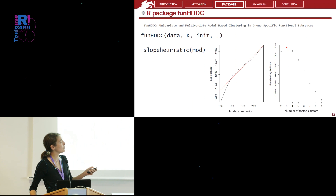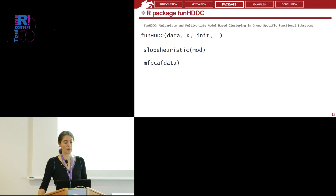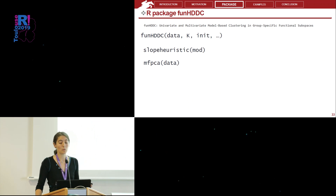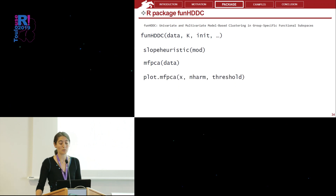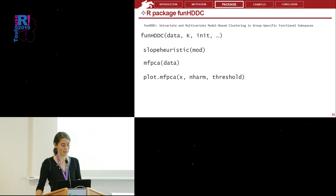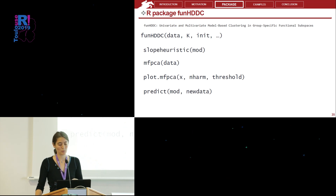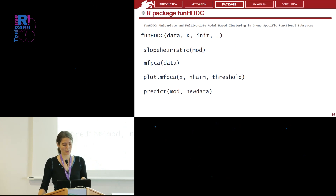This graph shows the partition into three groups that is selected. We also have a third function that allows a functional PCA, either multivariate or univariate, and another function to produce plots for this functional PCA. Finally, we have a predict function, which I will show later on a practical example.